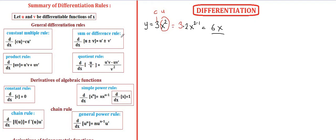Let's see the sum or difference rule. Differentiation is linear, so we differentiate each term one by one. For example, y equals 3x squared minus 5x. We differentiate 3x squared and negative 5x separately: derivative of 3x squared is 6x, minus derivative of 5x which is 5.